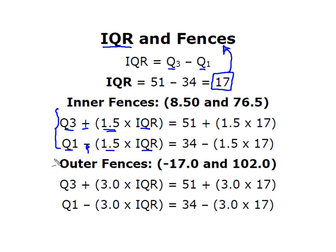I've got to have outer fences, and they're found very much the same way. I'm going to start at Q3 and add, which will move me to the right, but this time I'm going to go three times the IQR. Same thing for my lower outer fence. I'm going to start at Q1 and move to the left by subtracting three times the IQR. This formula of the plus and then the minus, the one and a half, these are standard formulas. Those formulas will not change regardless of how you found your quartiles.